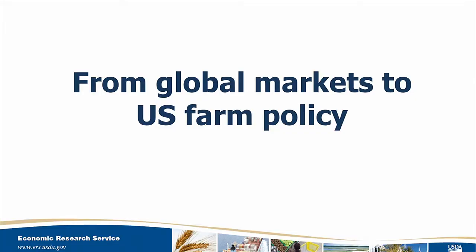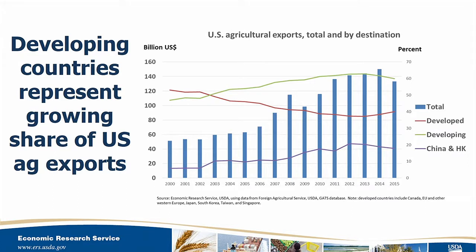I'm going to tie up a few key points on the drivers from the baseline. One trend is the growing importance of developing countries as a source of demand. In blue on this chart you see the growth in U.S. ag exports over the past several years, with a decrease last year largely due to exchange rate changes. In green is the share of exports going to developing countries, in red to developed countries. These lines crossed in 2003, and the baseline and common wisdom in the U.S. is that developing countries will remain the largest source of growth for agricultural markets and for U.S. producers.